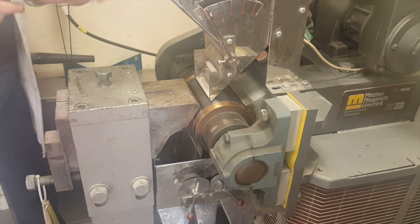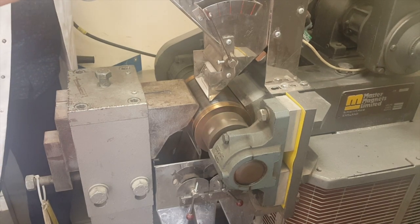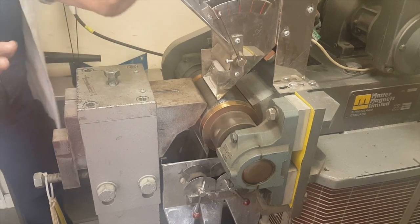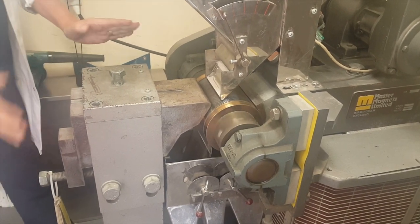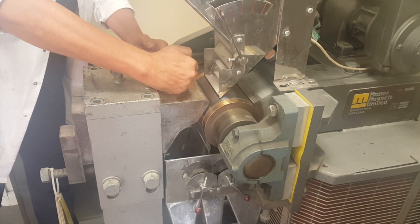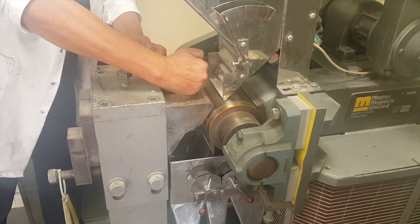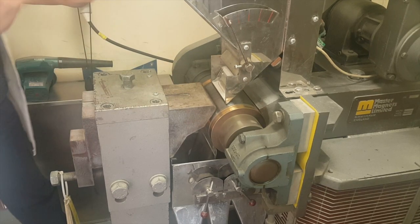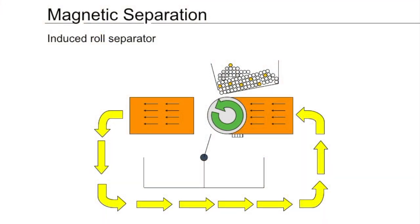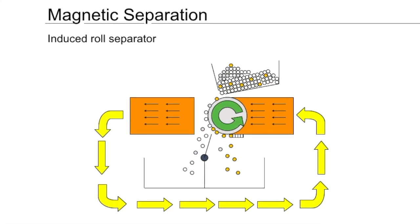It must be stressed that the machine is infinitely adjustable in that you can move this particular pole in and out to cope with different particle size material. And as it's an electrocoil, you can adjust it from zero to practically 2.2 tesla or 22,000 gauss on the surface of the roll.